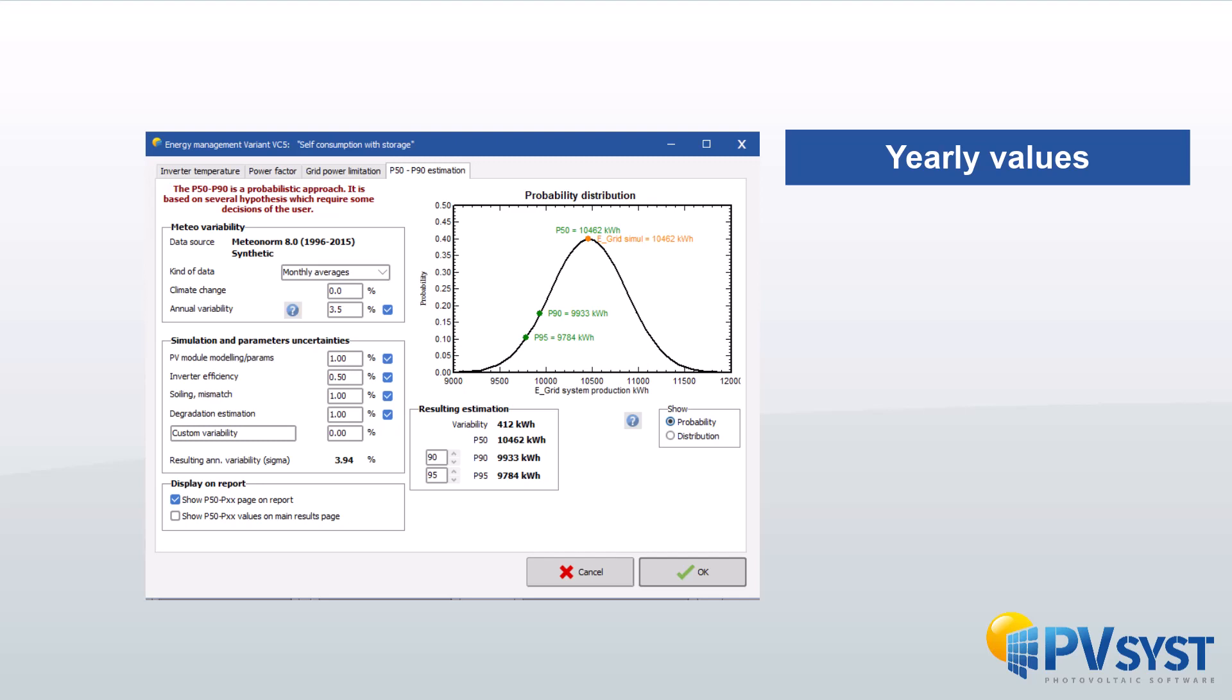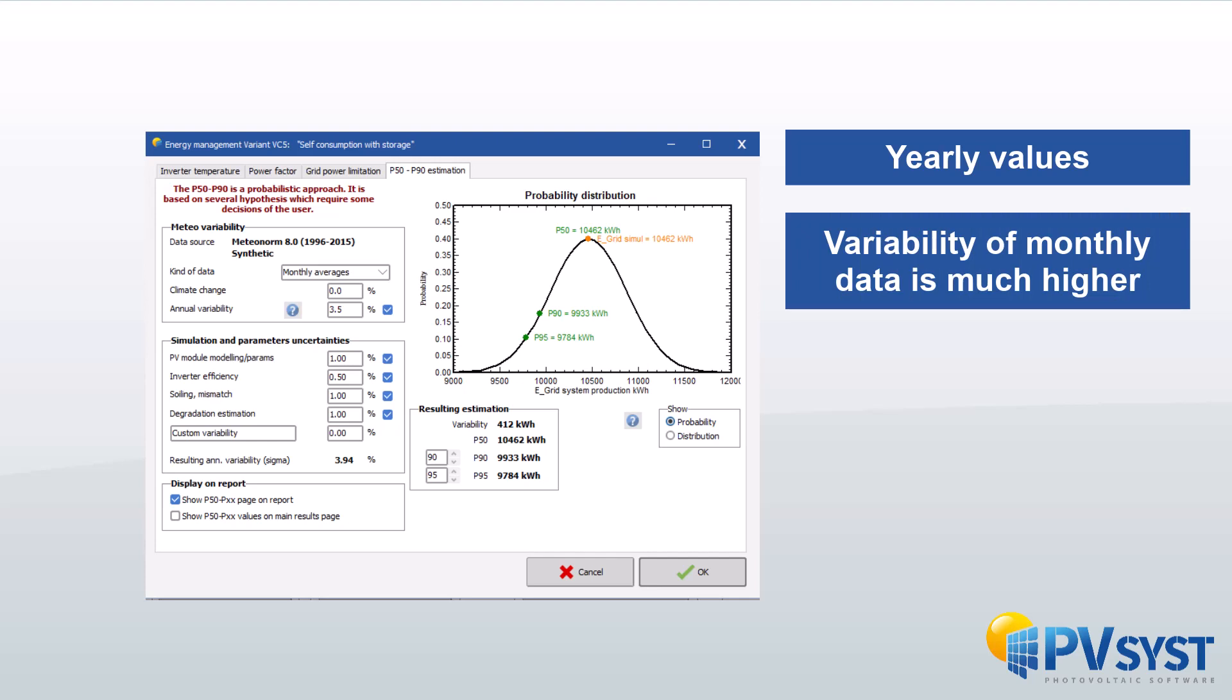When the variation of annual Meteo data is of an order of 3-4% RMS, the variability of monthly data from year to year is much higher, and defining a probability profile for each month will give erratic results.